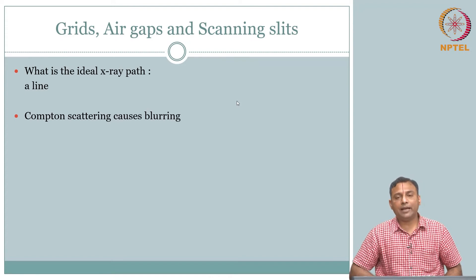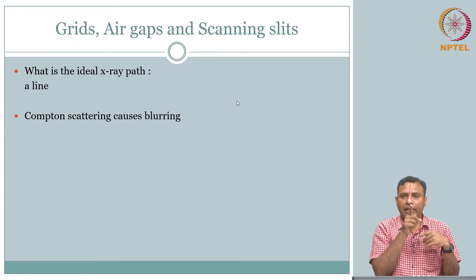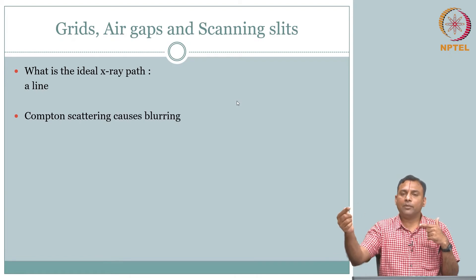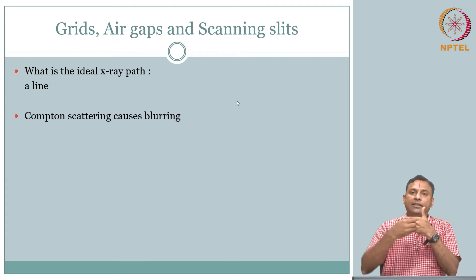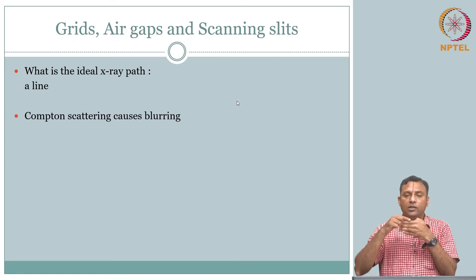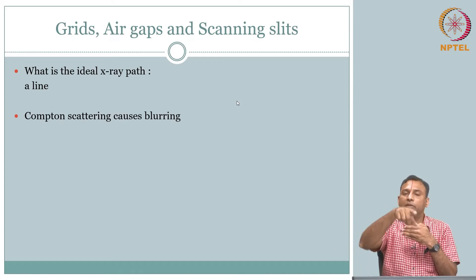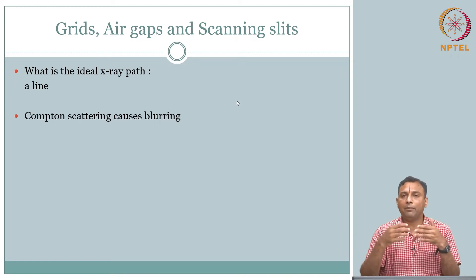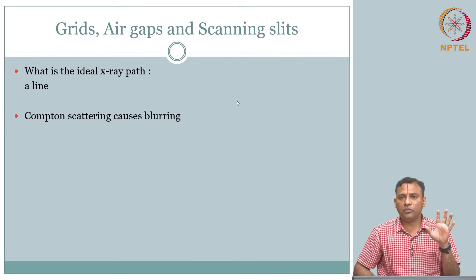Compton scattering essentially causes blurring. I am looking at the straight-line path, but a Compton-scattered photon comes and hits the detector. My model can only assume it came from the straight line, so whatever came from scattering gets incorrectly attributed — blurring your resolving capability. This is undesirable and we need to reduce it. Maybe we can create a kind of filter — a gating mechanism — before it hits the detector: I will only allow photons coming along the straight line and block those coming from the sides.